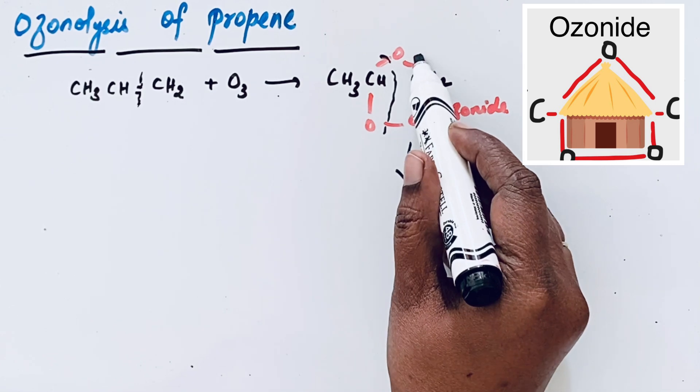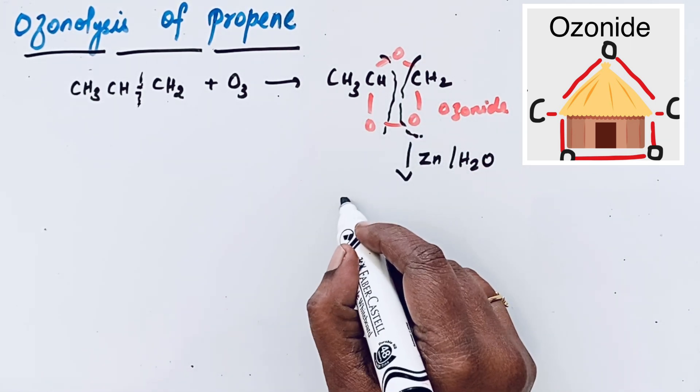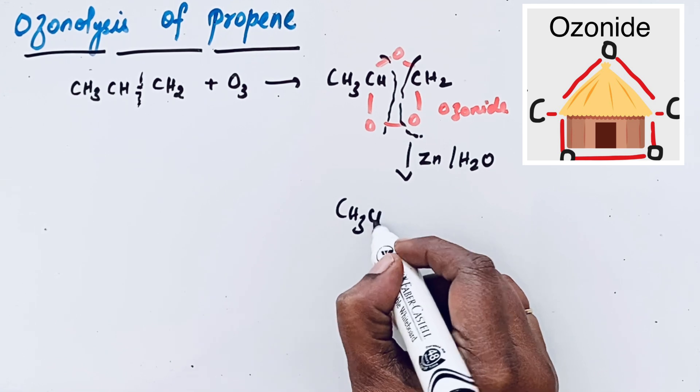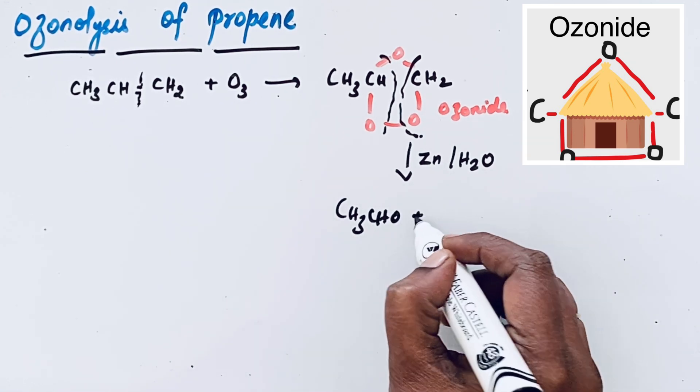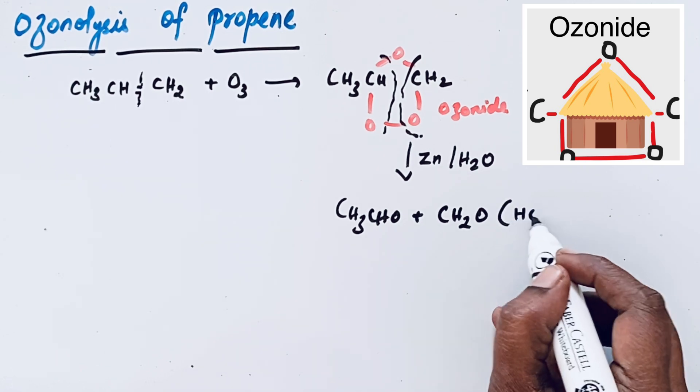Because of that there is a cleavage resulting in simpler molecules like CH3CHO and another molecule CH2O that can be written like HCHO.